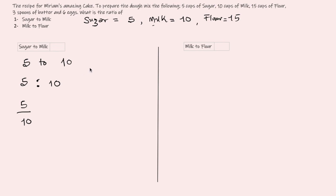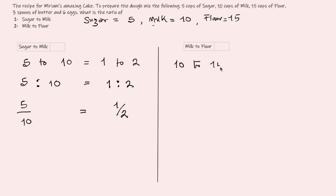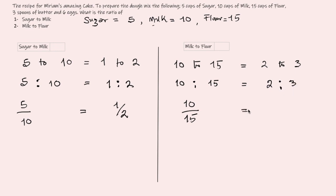We can reduce 5 to 10 since both share a common factor of 5, giving us 1 to 2, or 1 over 2. For milk to flour: milk is 10 and flour is 15, so this is 10 to 15 or 10 over 15. Both share a common factor of 5, so we can further reduce this to 2 to 3, or 2 over 3.